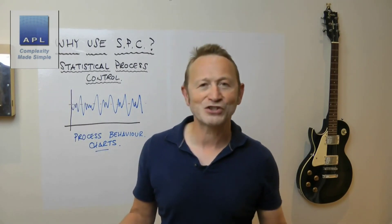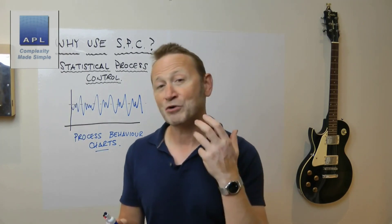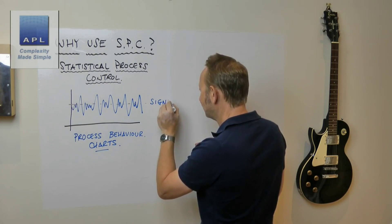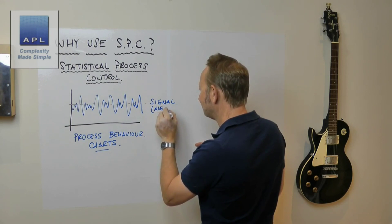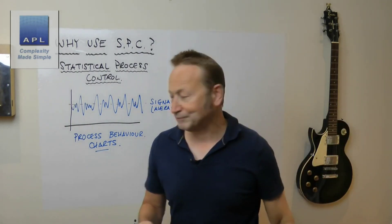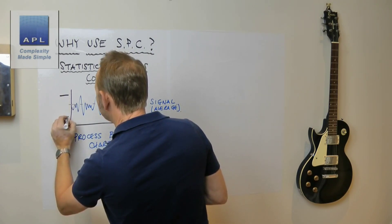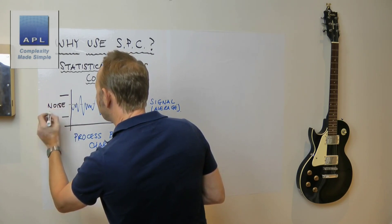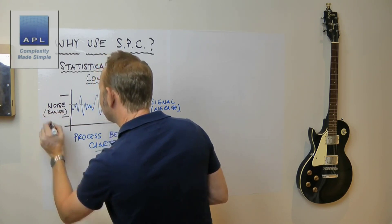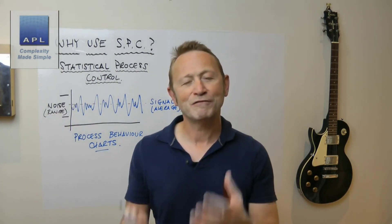Random number generators have certain features you can use to understand them. One feature is the signal — the average — which tells you where the process is sitting. But they also have another, more confusing feature: the spread, which is known as noise. You might also look at it as a basic statistic — it's the range that the process is generating. These are two things we can take into account from a random number generator.